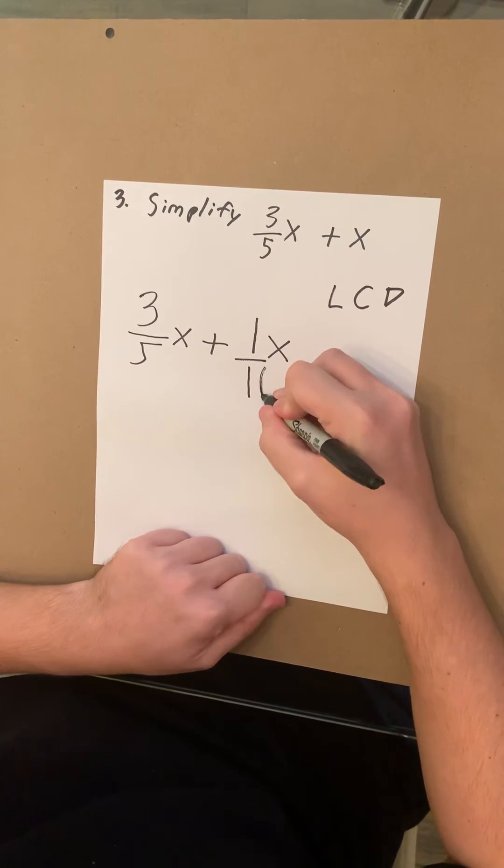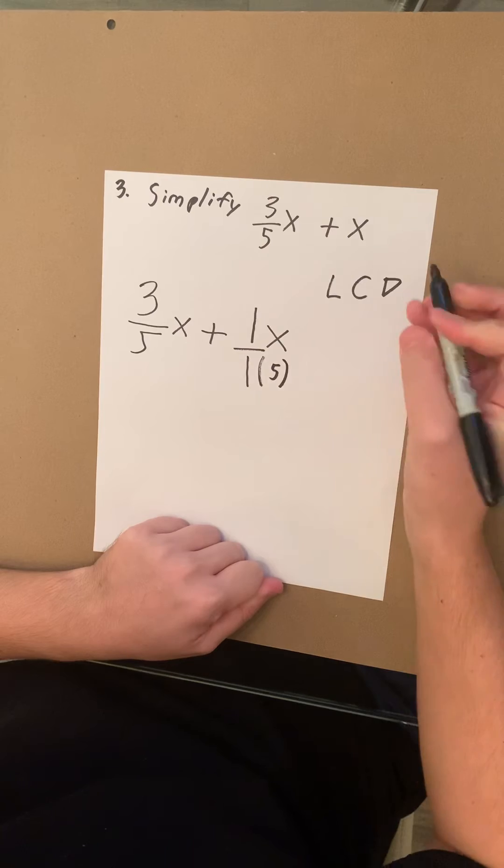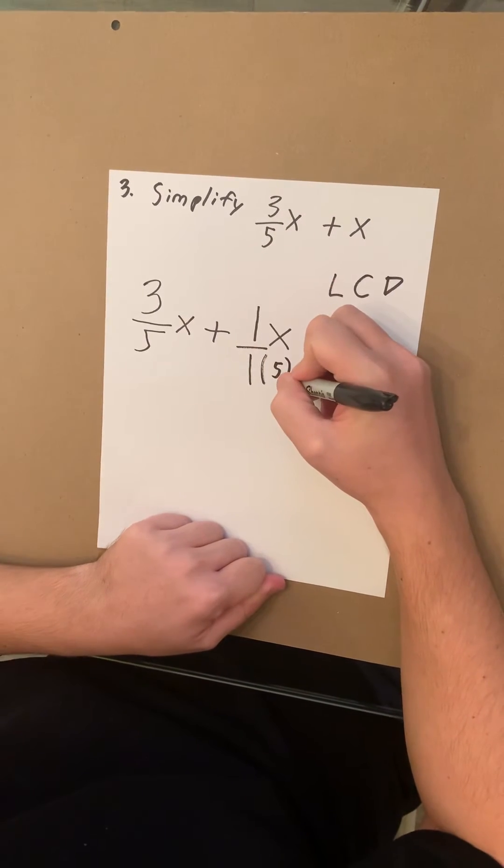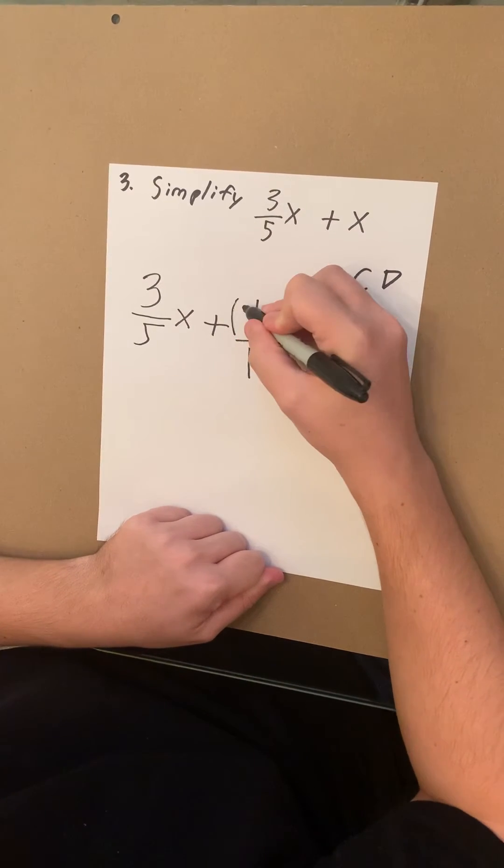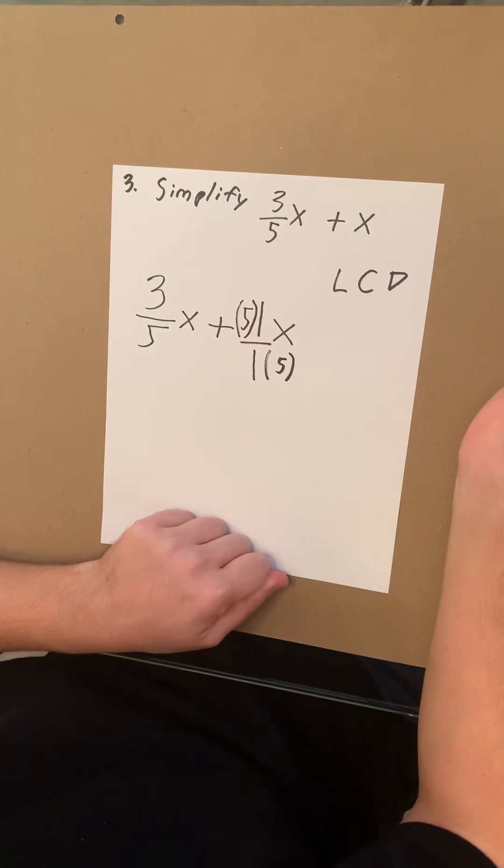So to make 1 of 5, you're gonna multiply that by 5, and whatever you do to the bottom must be done to the top. So you're also gonna multiply this one by 5.